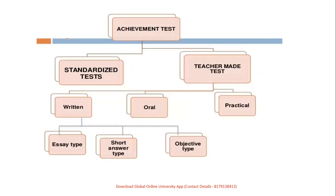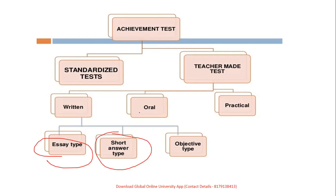Achievement test is divided into two: standardized and teacher-made. Standardized test follows a standard format from one institute to another. Teacher-made tests include oral, written, or practical examination. Written tests are based on essay type, short answers, or objective type. Oral and practical tests also include demonstrations.